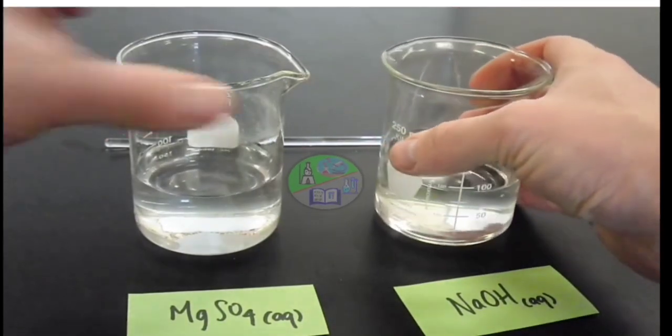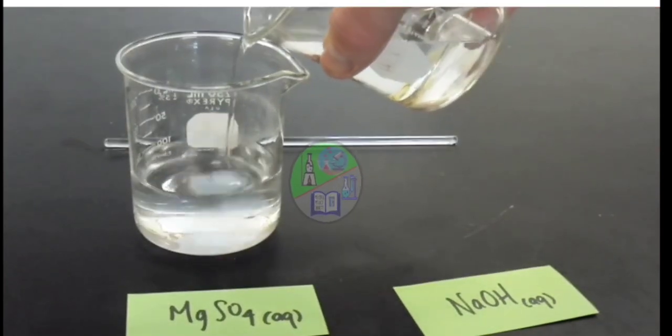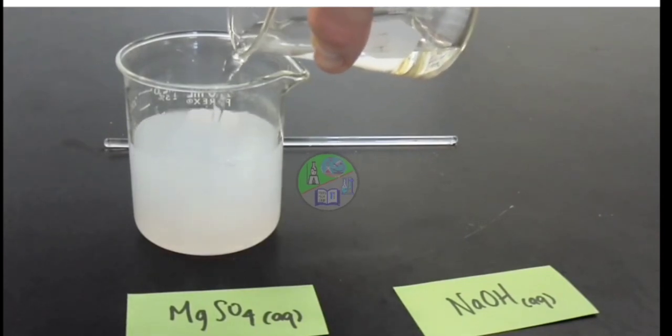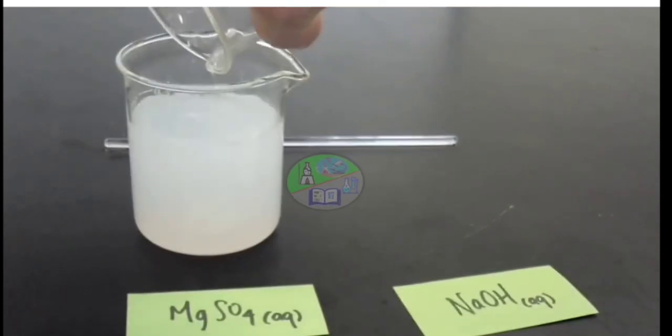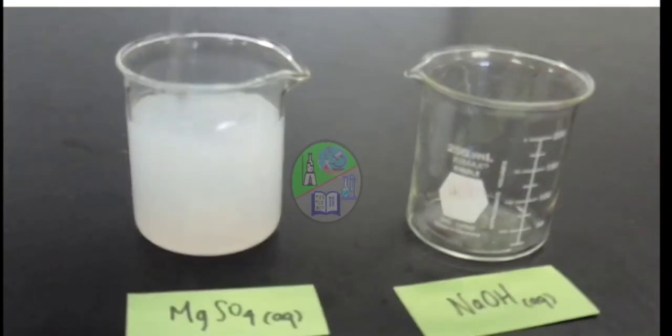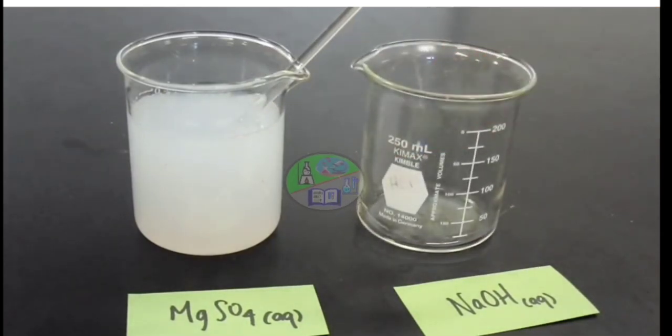Now, on mixing these two, we can see the formation of white cloudiness in the beaker. This cloudiness is nothing but the insoluble solid known as the precipitate.